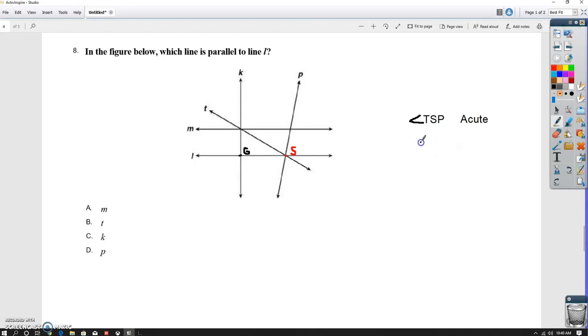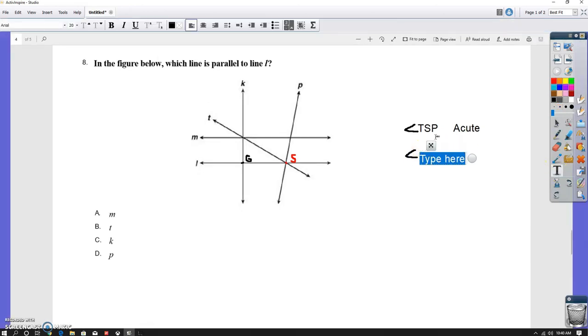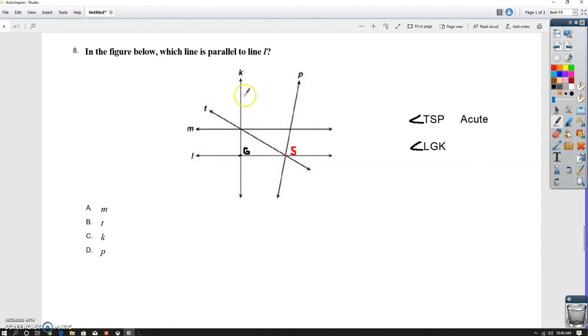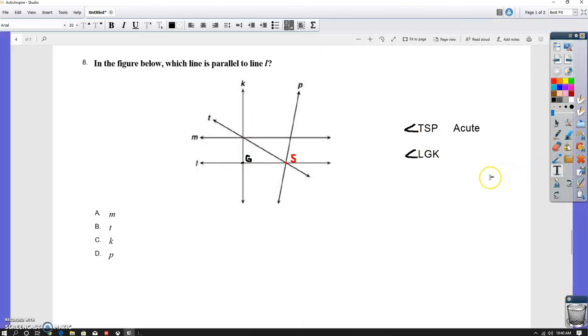Let's say angle LGK, and then I want to identify LGK is that acute, right, or obtuse? Well, we already said that we thought that this right here was perpendicular lines, okay, that L and K were perpendicular. So that means that LGK has got to be a right angle.